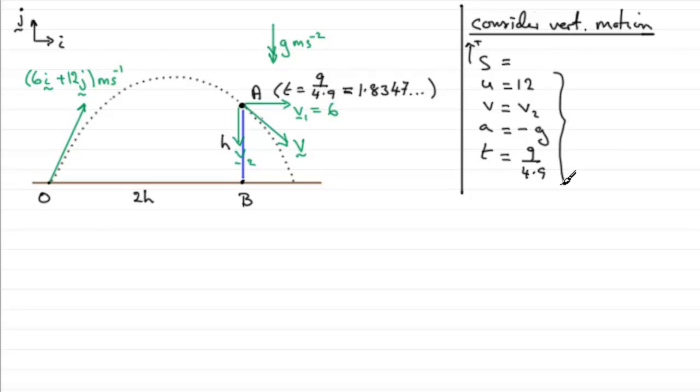So using V equals U plus AT, we just need to substitute our values in. Therefore, V is V2, and it equals U, which is 12, plus A, which is minus 9.8, times T, T being 9 over 4.9. This works out really nicely if you use this exact value because 4.9 cancels into the 9.8 twice. So you've got 12 minus 2 nines, 12 minus 18, which leaves you with minus 6. Minus 6 meters per second. And this is what we would expect, a negative value, because it's on the way down. So we've now got that V2 is 6 downwards.